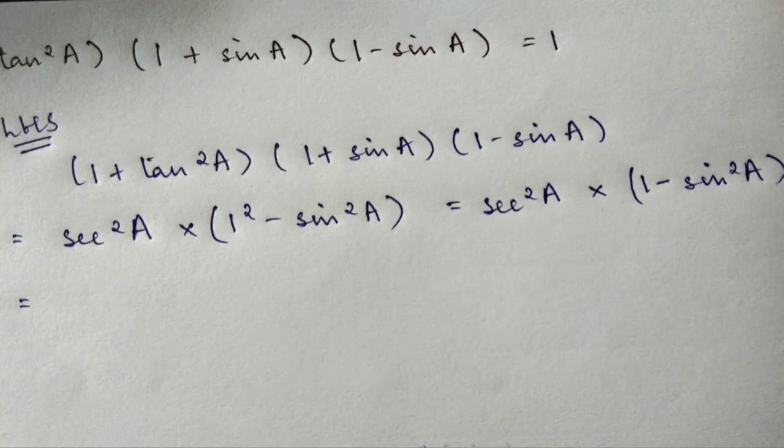It's 1. A square minus B square gives 1 minus sin square A. Step B is not necessary — if you want, you can skip this part. Okay? This question is really simple. We'll move on to question number two.